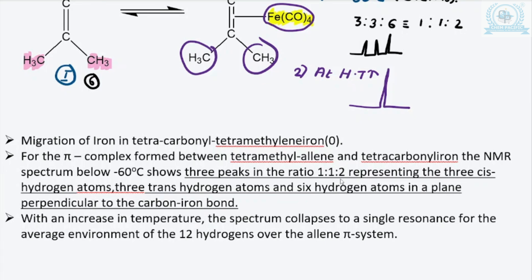In summary: in the first example there was rapid interchange of protons; here there is migration of the iron in tetracarbonyl iron(0). The nomenclature is tetracarbonyl tetramethyl iron(0), because there are two types of ligands — carbonyl and methyl — listed alphabetically. When the overall complex is anionic it is written in brackets and called ferrate.